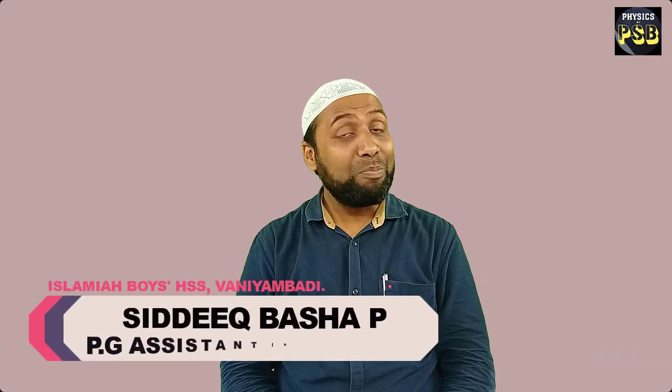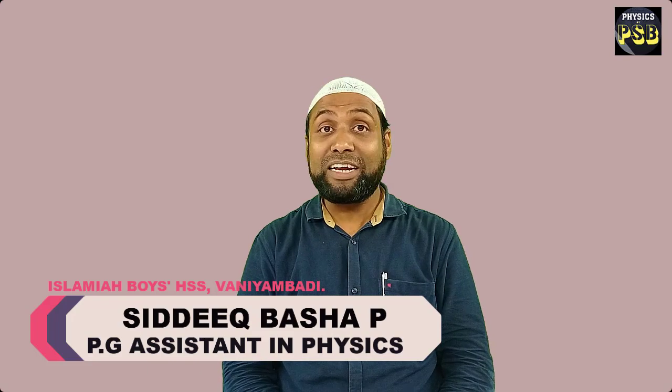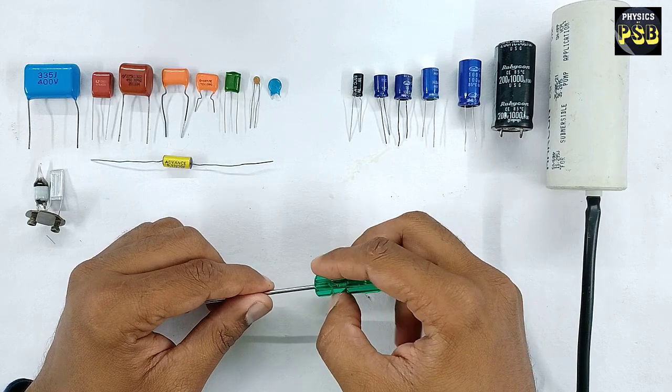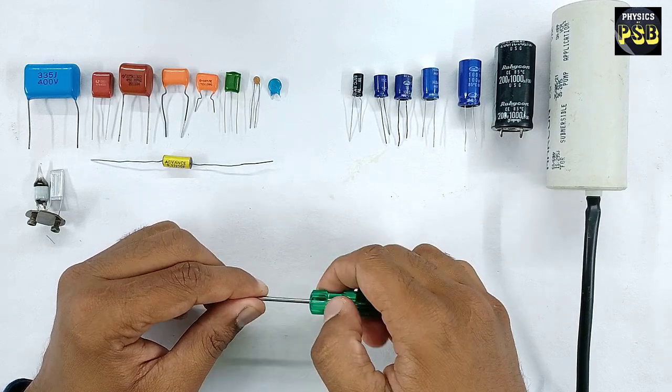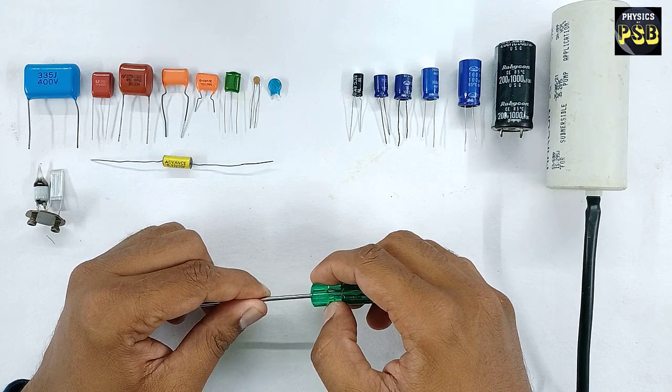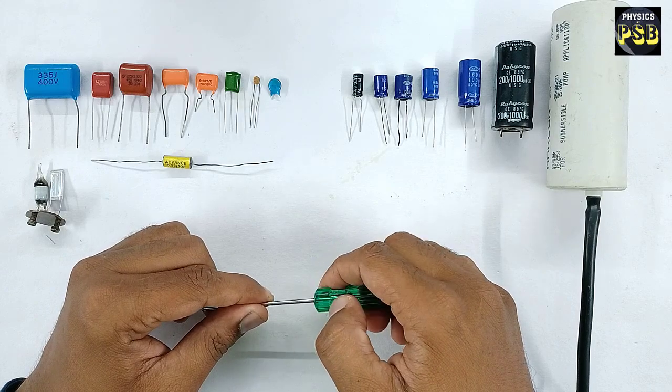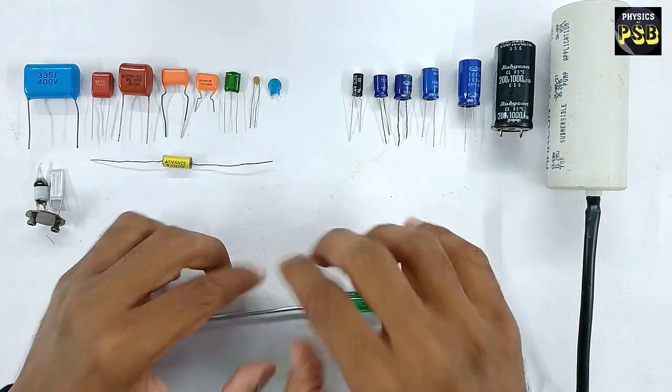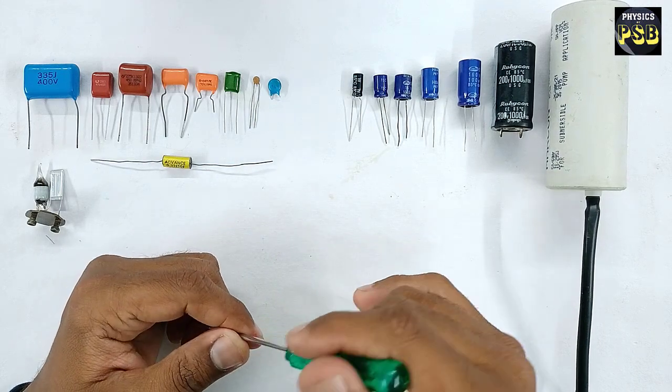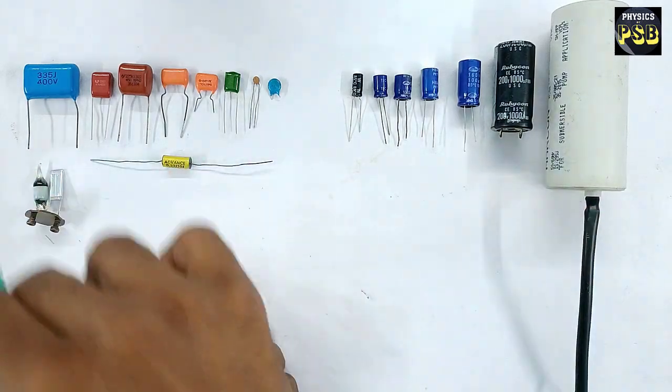Assalamu alaikum, hope you are doing fine. In this video we will discuss different types of capacitors. A capacitor is a charge storing device consisting of two metal films separated by a small distance. The gap between the plates is filled with air or some kind of dielectric material. Dielectric materials are insulating materials. We classify capacitors into two types: polar capacitors and non-polar capacitors.